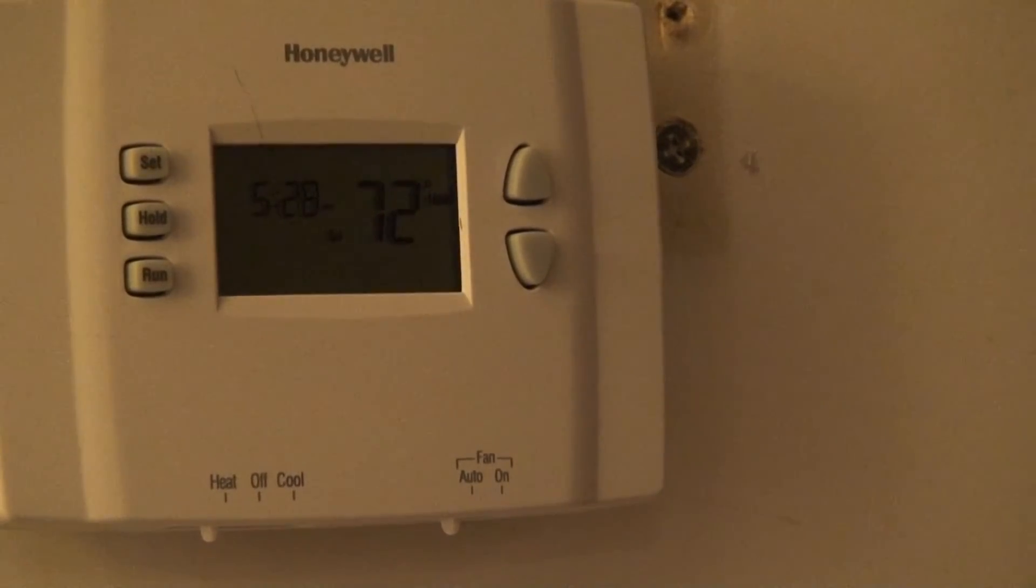If it reached 72, then obviously the other thermostat was bad too, probably because it got paint on it so it wasn't reading the full temperature. Because it was reading 68 in here, this one's reading at 72.